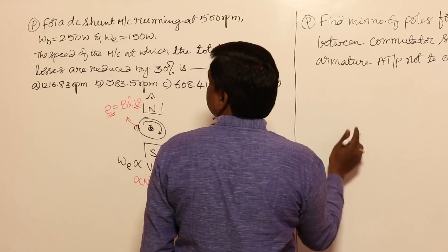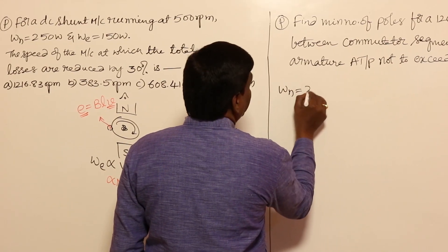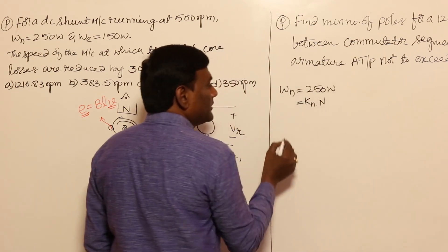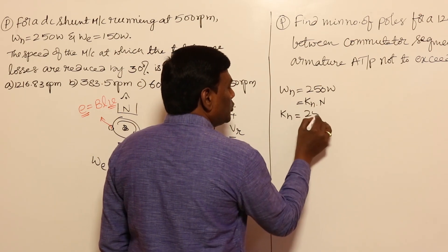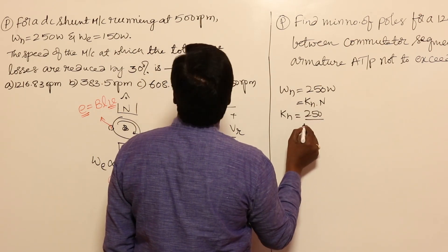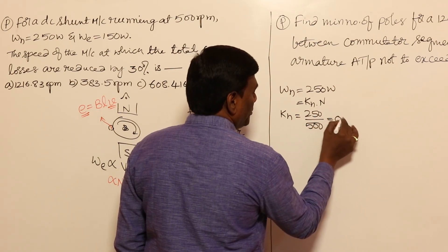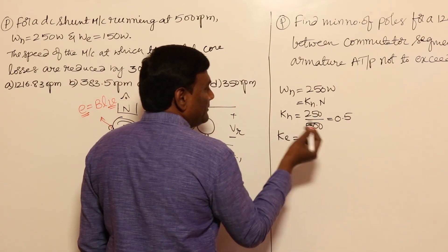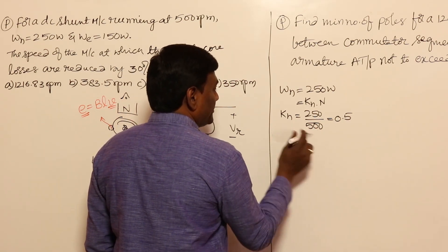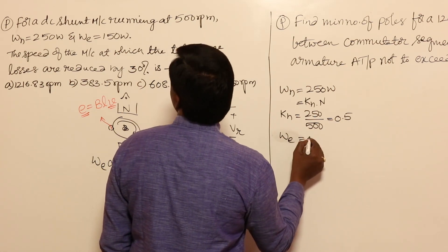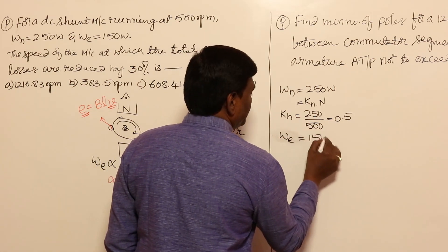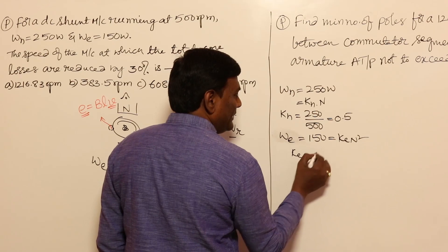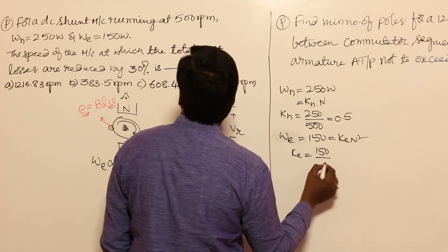Using the given data: hysteresis loss = 250 W = k_h × 500, so k_h = 250/500 = 0.5. Eddy current loss = 150 W = k_e × 500², so k_e = 150/500² = 150/250000. Keep both constants aside for use in the next step.